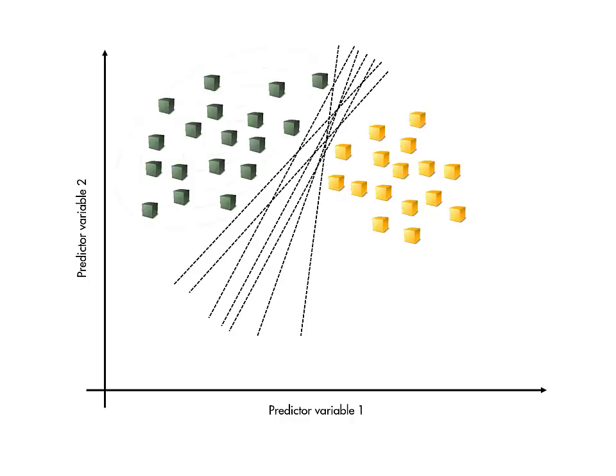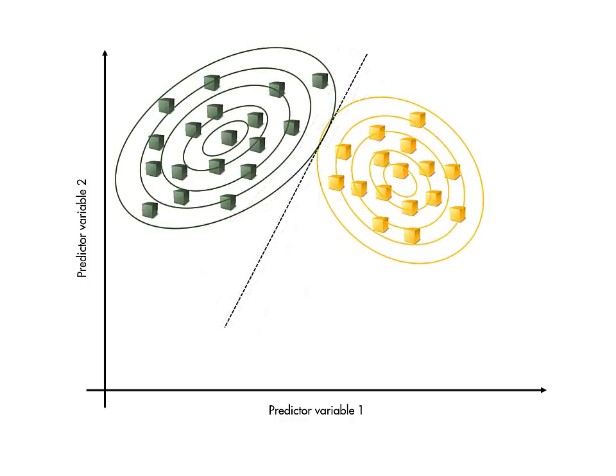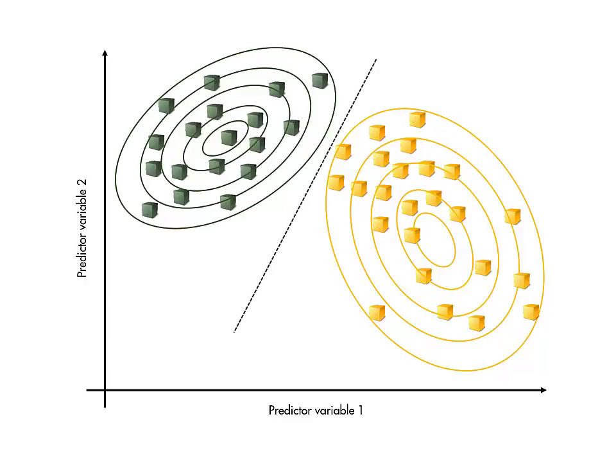One approach is to use some kind of statistical distribution fit. However, this means that even points far from the boundary have an influence on where the boundary is located.